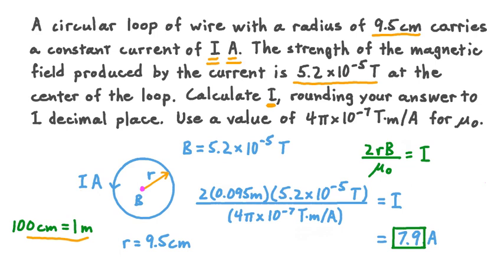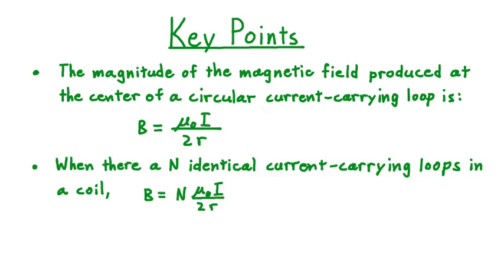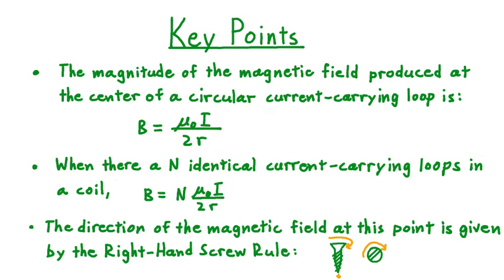Let's now summarize what we've learned about the magnetic field due to a current in a circular loop of wire. The magnitude of the magnetic field at the center of a circular current-carrying loop equals mu-naught times I divided by 2 times the radius. When there are N identical current-carrying loops in a coil, the field magnitude at the center equals the single-loop field magnitude multiplied by N. Finally, the direction of the magnetic field at the center of a circular current-carrying loop is given by the right-hand screw rule: turn a right-handed screw in the direction of the current, and the tip and travel direction of the screw give the field direction.